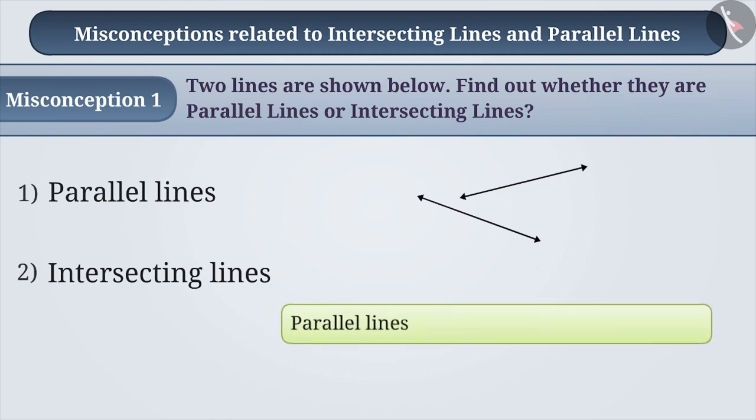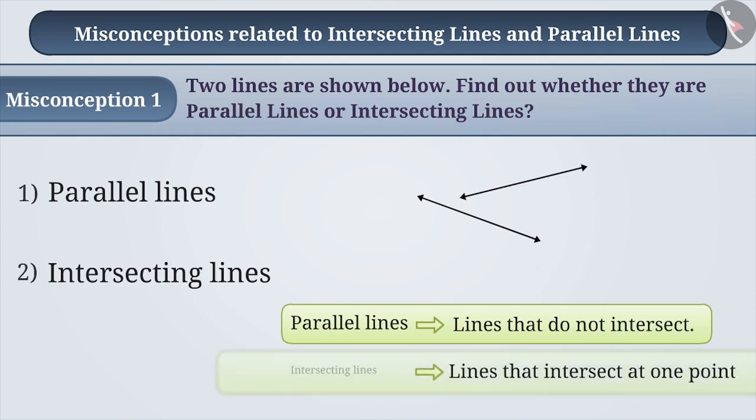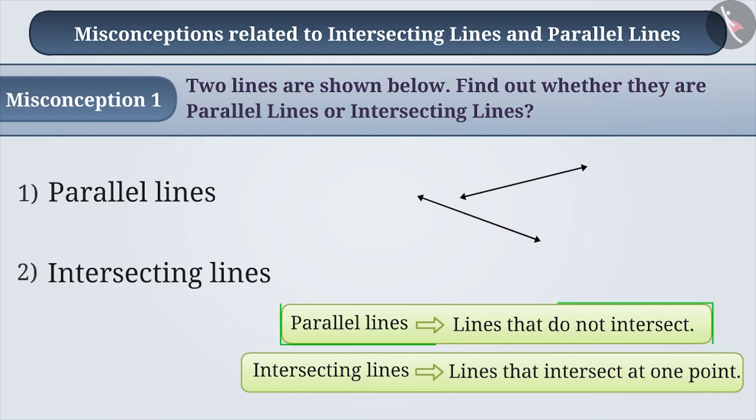Lines that do not intersect are called parallel lines, whereas lines which intersect at a point are called intersecting lines. Some children memorize these interpretations. They do not understand their true meaning.